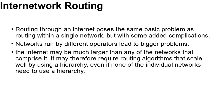Inter-Network Routing poses some basic problems as routing within a single network, but with some added complications. Networks may internally use different routing algorithms. For example, one network may use link state routing and another distance vector routing. Since link state algorithms need to know the topology but distance vector algorithms do not, this difference alone would make it unclear how to find the shortest path across the internet.